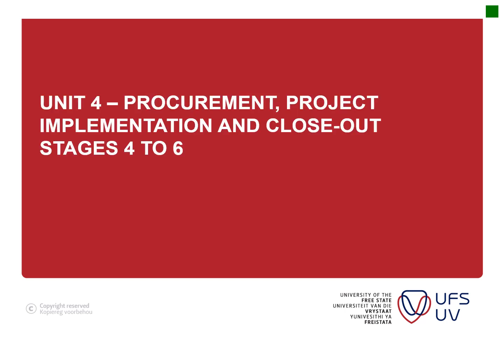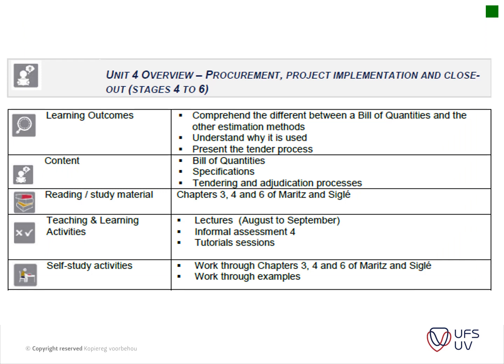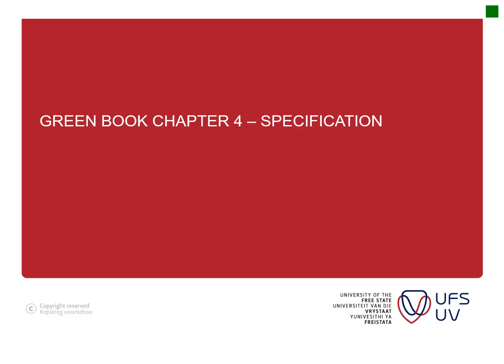Today we're still busy with Unit 4 - procurement, project implementation and closeout. Unit 4 is more about stages 4, 5 and 6, but it influences stages 5 and 6 in a big manner, which is why it's included here. We're going to look at Chapter 4 of the green book, which is all about specifications.